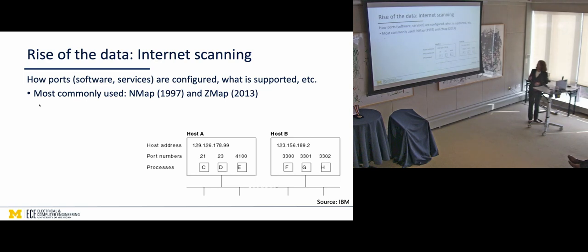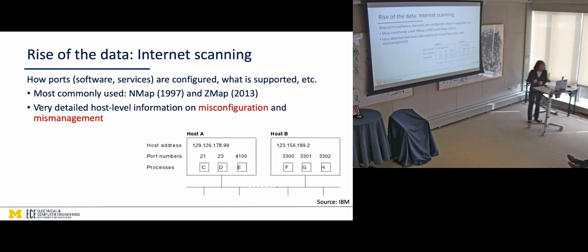Two most commonly used such packages, one is NMAP, that dates back to more than 20 years ago, and then ZMAP came onto the scene about 10 years ago, which is a much faster, efficient version of NMAP. And this is a shout-out to our colleagues in computer science. ZMAP actually came out of Alex Halderman's group. It's a major internet scanning tool. Okay? As I said, what this gives us is very detailed host level. What I mean by host is individual machine, information on misconfiguration and mismanagement. What I mean by these two words is essentially you get a sense of how things are managed with respect to known best practices.